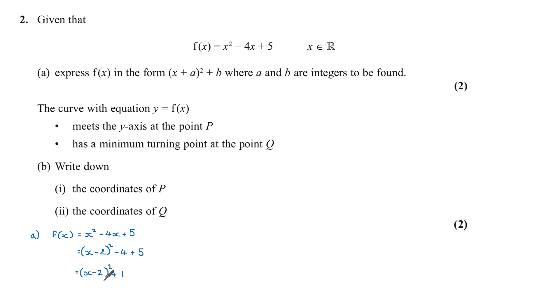So our a is negative 2, and our b is 1. The curve with equation y equals f of x meets the y-axis at the point P. It has a minimum turning point at the point Q. Part b: write down i, the coordinates of P, and ii, the coordinates of Q.